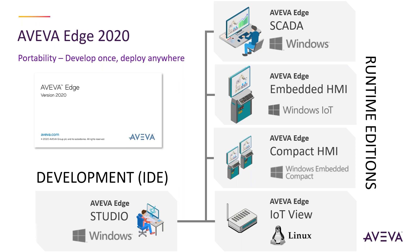Aviva Edge IoT View is our runtime for Linux, and that's the product that is evolving fastest in functionality. We're seeing great demand from customers, especially in large, medium, or small IoT architectures, where they want distributed devices — usually in high volume — to collect data from machines and equipment locally, then manipulate, filter, and aggregate this information and push it to a control room running System Platform and/or directly to the cloud.